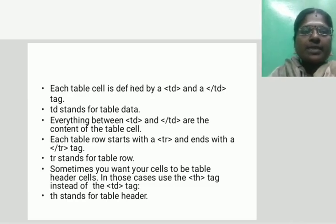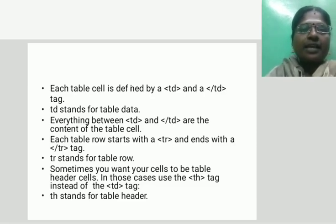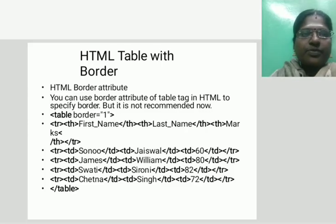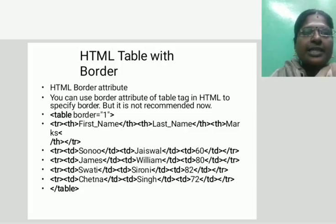Sometimes you want your cells to be table header cells. In those cases, use a th tag instead of the td tag — it stands for table header. Regarding the HTML border attribute: you can use the border attribute of the table tag in HTML to specify the border, but it is not recommended now.